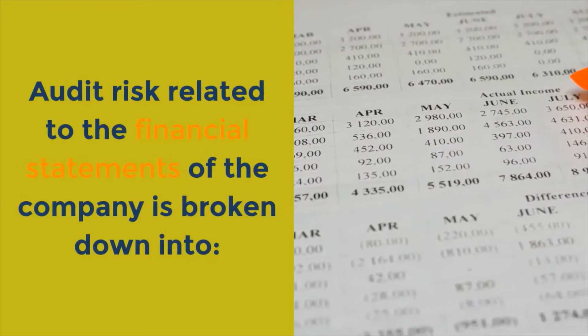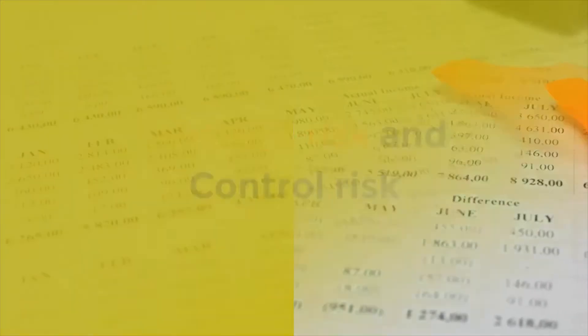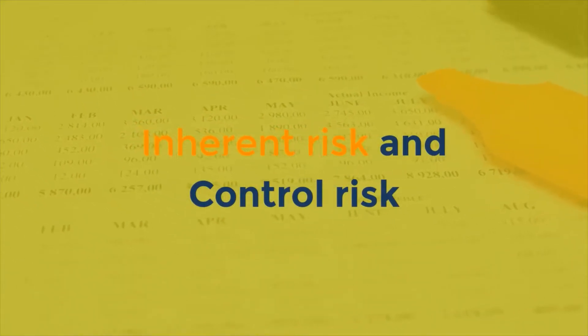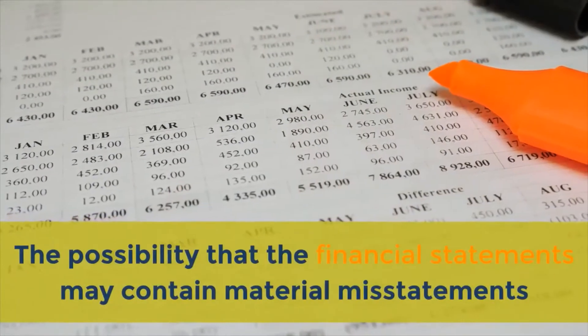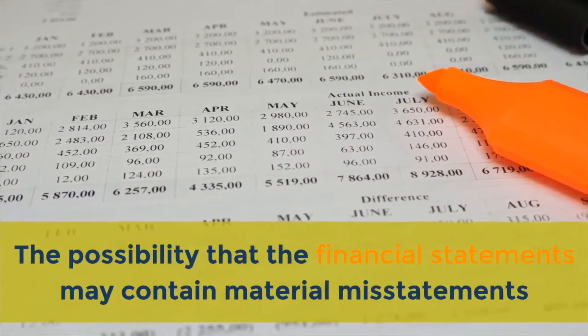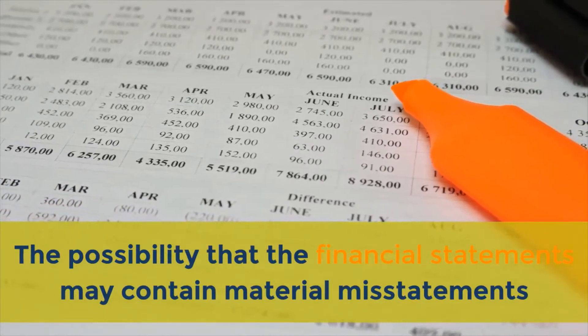Audit risk that is related to the financial statements of the company is broken down into inherent risk and control risk. Inherent risk is the possibility that the financial statements may contain material misstatements.